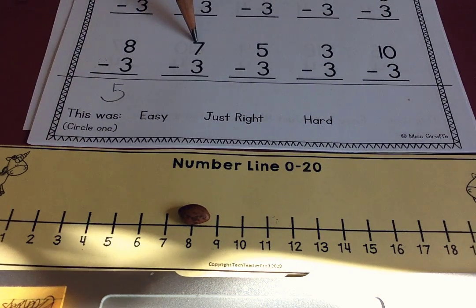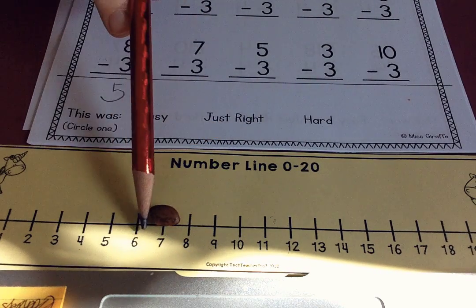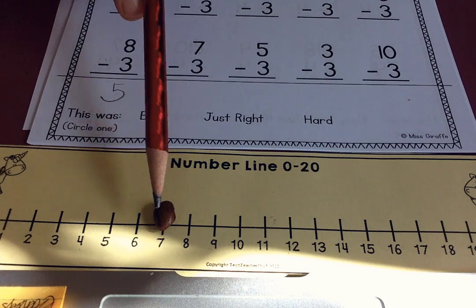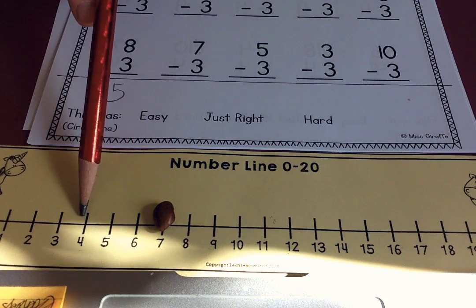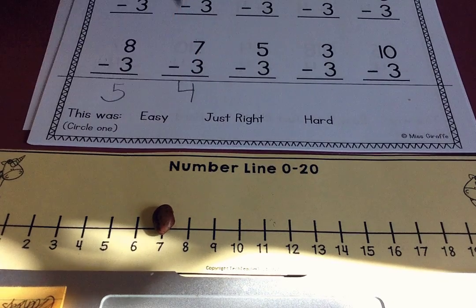Let's do this one. Seven, take away three. We start at seven and then we go back three. One, two, three. And we land on number four. Seven, take away three is four.